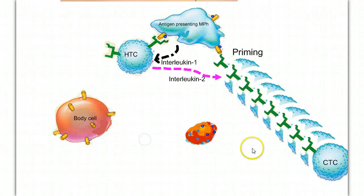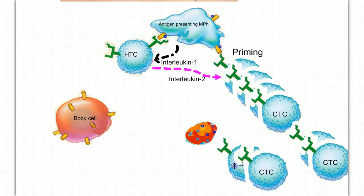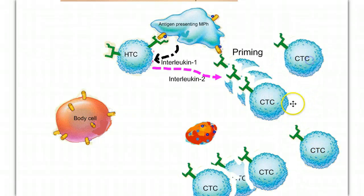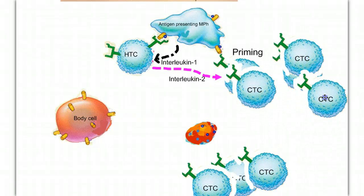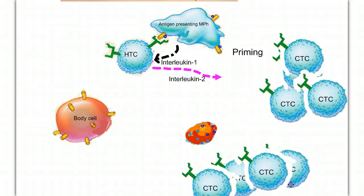This army of cells is then subdivided into two populations: effector cells, which are going to go out and do battle, and memory cells, which will be held in reserve to handle any later exposures to the same pathogen.